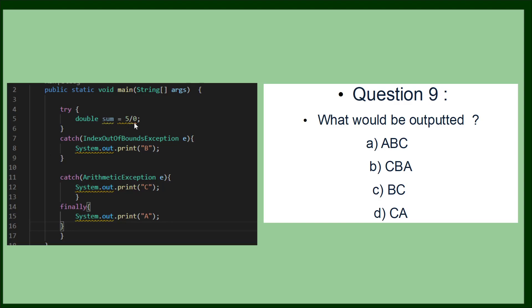Question nine is focusing mostly on the finally and what that does when there's an exception that happens. We are, again, dividing by zero. So it will not catch the index out of bounds. It will go straight and catch the arithmetic exception, so it will print C. And because we have a finally, it will also print A. So we've got C, A. Again, if you're struggling with that finally, go to the playlist and have a look at what that does.